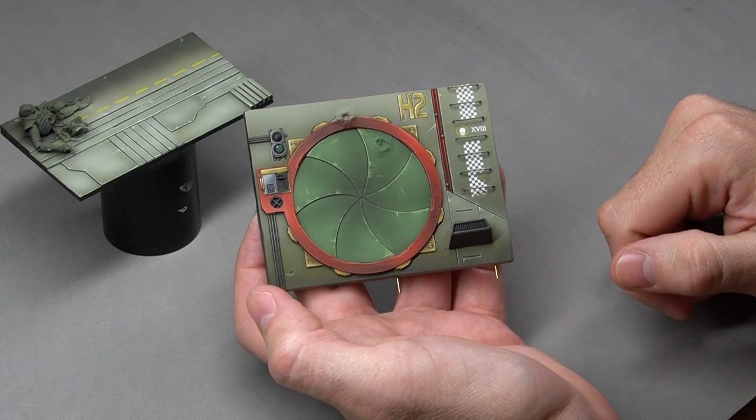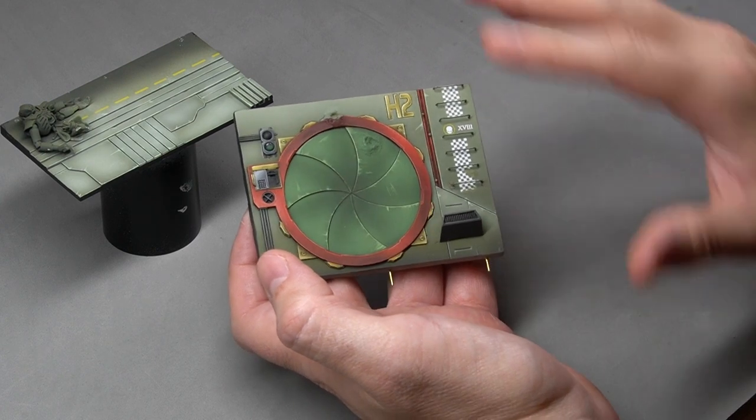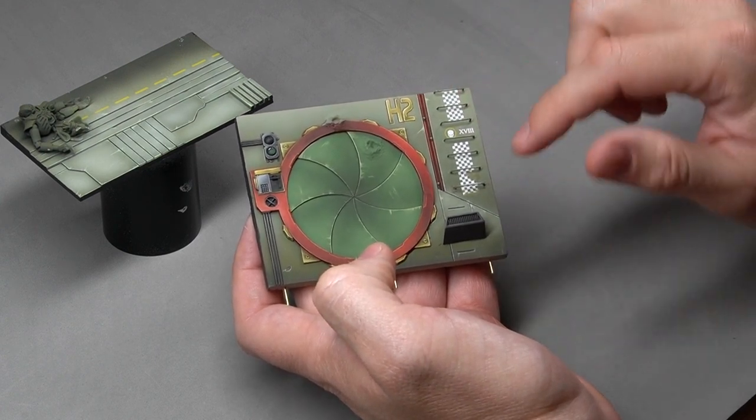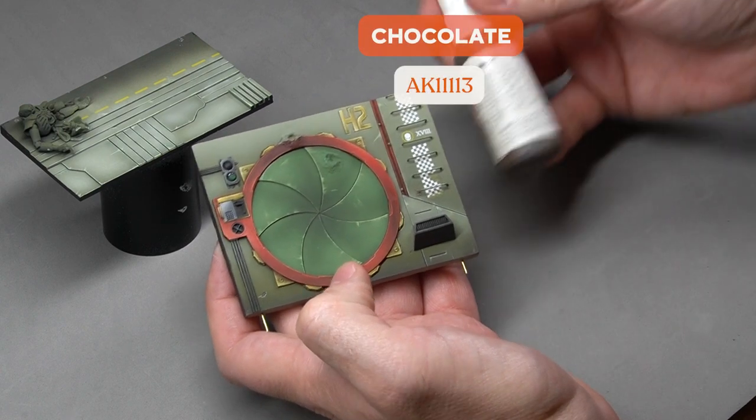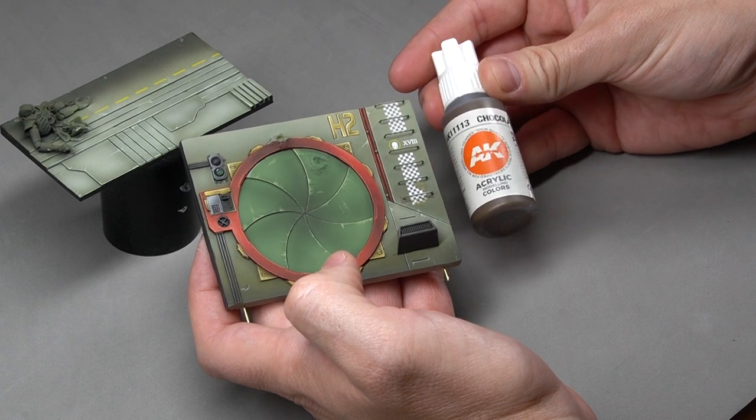With the outlining, we have further emphasized all the panels both on the wall and the floor. Next, we're going to create a series of paint chipping and weathering effects. For this, we'll use the color chocolate brown for chipping.